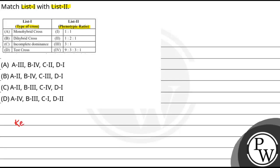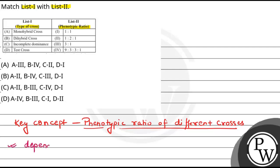Hence, we can say what concept of this question is going to happen. The key concept is phenotypic ratio of different crosses according to Mendel's law. On the basis of that, there are different crosses depending on the traits. We can say that these different crosses depend on the traits and characters.